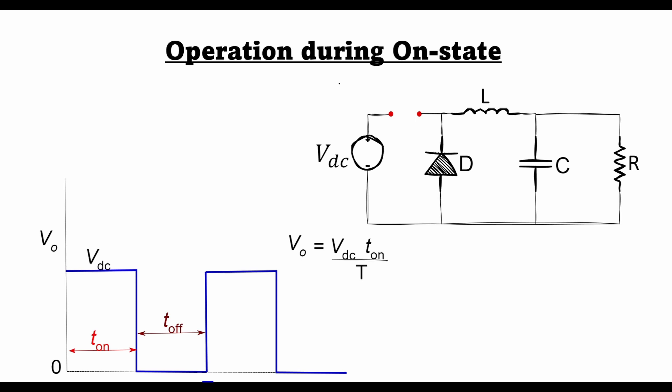In the previous two lectures we derived the expression for the output voltage of a buck switching regulator as VDC times T on over T. We also looked at the feedback control in a buck switching regulator.